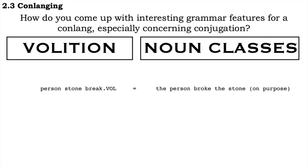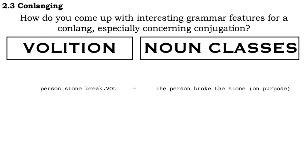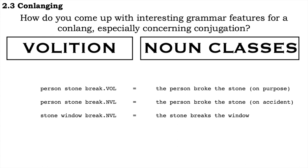For a transitive example, using simplified glosses: person, stone, break, volitional - the person broke the stone on purpose. Person, stone, break, non-volitional - the person broke the stone on accident. Meanwhile, if we had the stone broke the window, this could only be rendered with a non-volitional verb because stones, falling into the inert superclass, have no volition. Stone, window, break, non-volitional. This seemed like a neat interaction between the volition system and the noun class system.